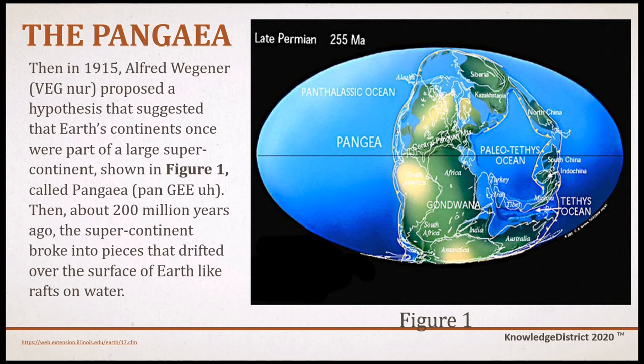Then in 1915, Alfred Wegener proposed a hypothesis suggesting that the Earth's continents once were part of a large supercontinent, shown in figure 1, called Pangea. Then about 200 million years ago, this supercontinent broke into pieces that drifted over the surface of Earth like rafts on water.